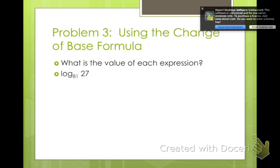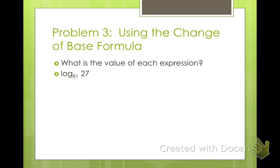So what's the value of each expression? Log base 81 of 27. Well, to rewrite this, we can rewrite it as log of, we need to find a common base. What's our common base between 27 and 81? I'm pretty sure it's 3. So we need to rewrite it as log base 3 of 27 divided by log base 3 of 81. And then each part we can reduce, because 3 to what power makes 27, and 3 to what power makes 81. Well, we just get 3 divided by 4.